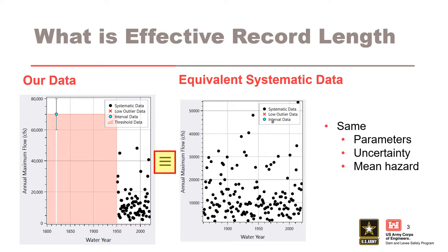It might surprise you to learn that these two data sets are equivalent, statistically speaking. They have the same log-Pearson type 3 frequency curve, the same distribution parameters, and the same uncertainty as measured by the confidence or credible intervals. Despite having two different inflow records, these two data sets are equivalent. We can estimate an equivalent amount of systematic data that it would take to produce the same frequency curve and the same confidence or credible intervals. This equivalent amount of systematic data is called the effective record length.